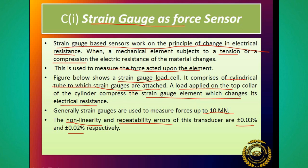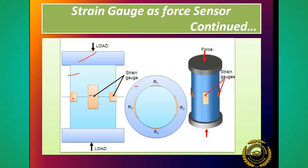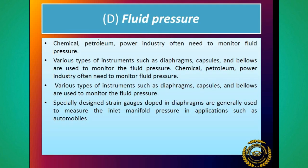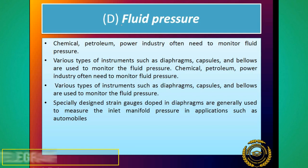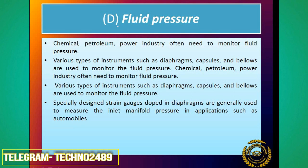Force measurement is now complete. Now we will see - students - for measuring the fluid pressure, which gauge or sensor is used? For the fluid pressure, this is the D type, and C type was the force part - so the third part is fluid pressure.